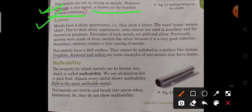Lustrous: Metals are shiny in appearance, they show lustrousness. The word luster means shine. Due to their shiny appearance some metals are used in jewelries and for decoration purposes, for example gold and silver. Previously, mirrors were made up of shiny metals like silver because it is a very good reflector.